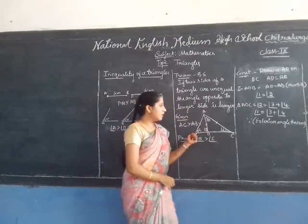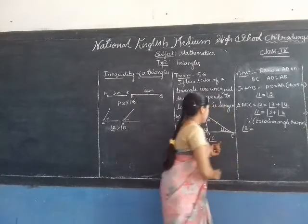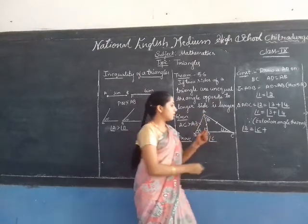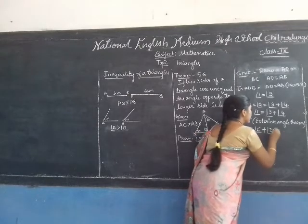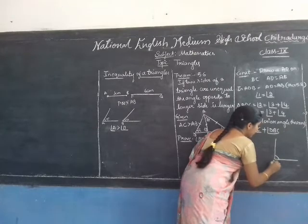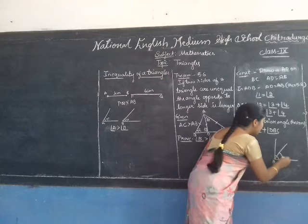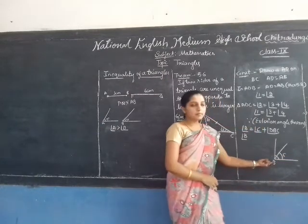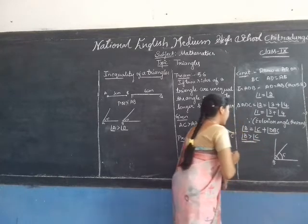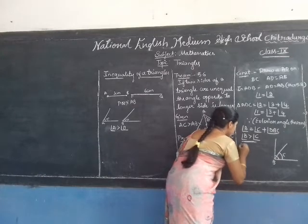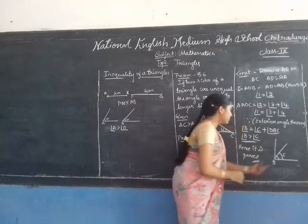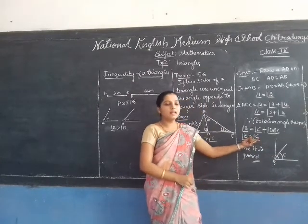Here, angle 1 corresponds to angle B, angle 3 corresponds to angle C, and angle 4 corresponds to angle DAC. Since angle B equals angle C plus angle DAC, and angle DAC is positive, we can conclude that angle B is greater than angle C. Hence, by this argument, it is proved that angle B is greater than angle C.